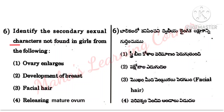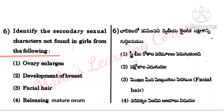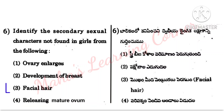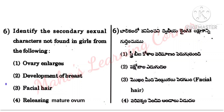Question: Identify the secondary sexual character NOT found in girls from the following. Options: Ovary enlarges, development of breast, facial hair, releasing mature ovum. Correct answer: Option 3, facial hair. Facial hair is not found in girls — it is found only in boys. So Option 3 is the correct answer.